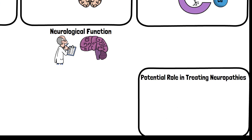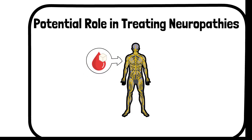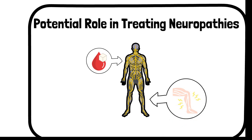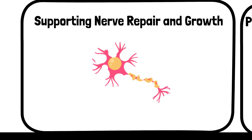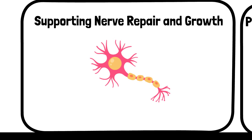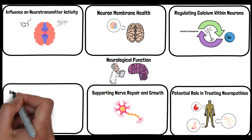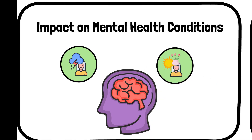Neuropathies, such as diabetic neuropathy, involve nerve damage often due to high blood sugar levels. Inositol has been studied for its potential in supporting nerve health and alleviating symptoms of neuropathies, which is particularly important as diabetic neuropathy can lead to serious complications. Inositol may also aid in nerve repair and growth, important for recovering from nerve damage in conditions like diabetes or certain neurological disorders. Beyond physical nerve functions, inositol's influence on neurotransmitters suggests its potential in managing mental health conditions.